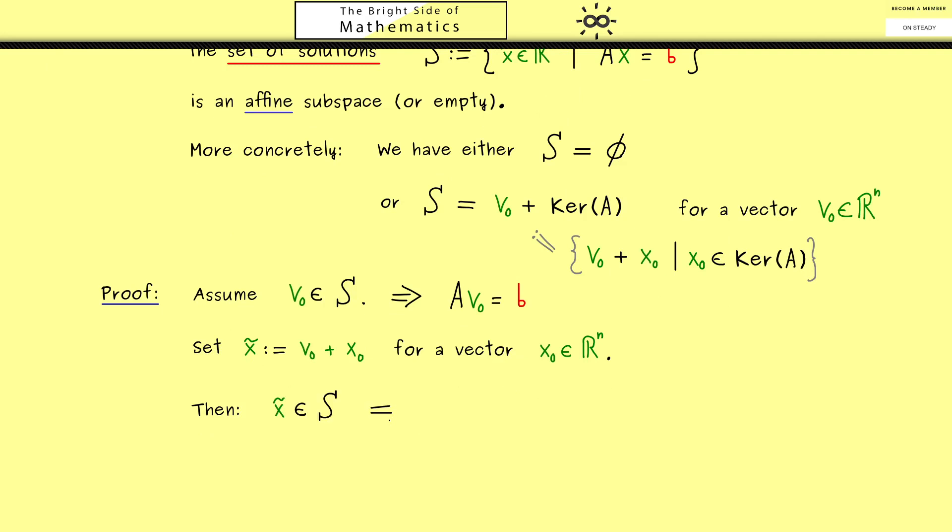This means this is equivalent for x tilde solving the system. More precisely, A multiplied with x tilde is equal to the vector b. However now here on the left hand side we can just substitute x tilde with the definition. And then it's not a surprise that we can use the linearity here. Or in other words we use the distributive law for the matrix vector multiplication.